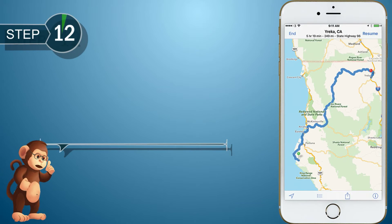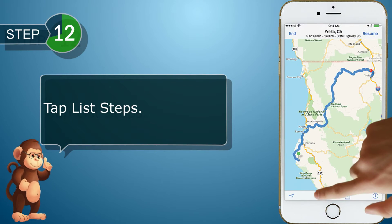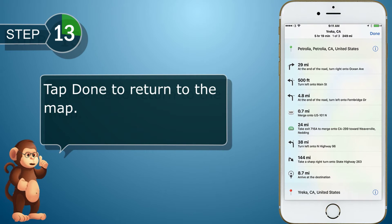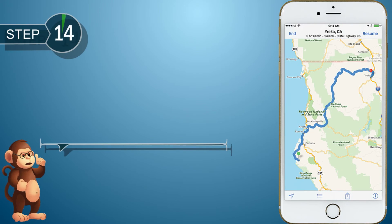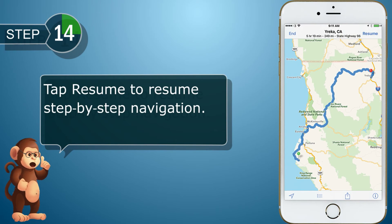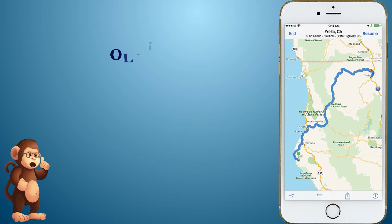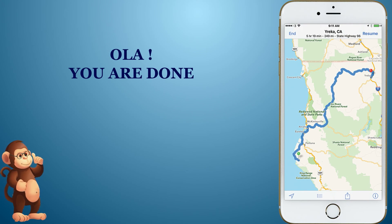Tap List Steps. Tap Done to return to the map. Tap Resume to resume step-by-step navigation. Tap on the home button. Thank you.